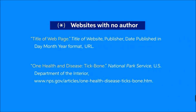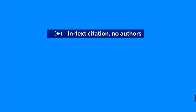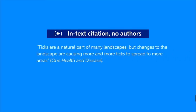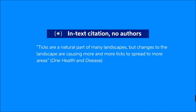Sometimes websites do not state who wrote the information on the page. When no author is listed, you can omit the author information from the citation and begin with the title instead. The rest of the citation will follow in the same structure as before. Often, web pages are published by organizations or corporations with no author indicated. In these cases, you can assume that the publisher also authored the web page. Since the author and publisher are the same, you can skip showing an author and just indicate the organization or corporation as the publisher. The in-text citation for a website without an author is noted with the first word or words in the title in italics and surrounded with parentheses, followed by a period.